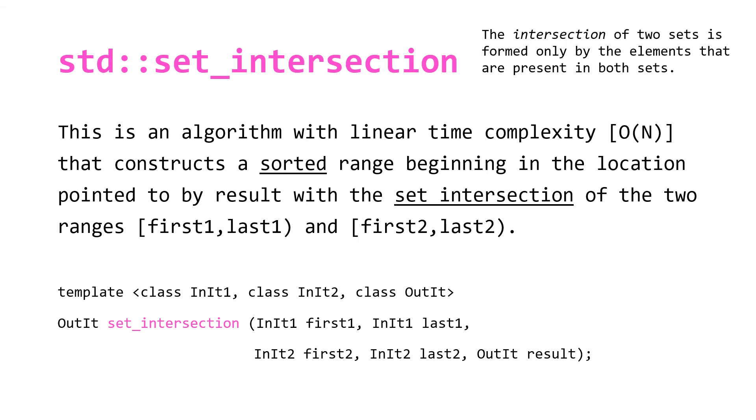Note that the intersection of two sets is formed only by the elements that are present in both sets. Using Venn diagrams once again, this will look as follows: only taking the elements that exist both in a and b. Very similar function declaration, just the name is different. Note that for all four of these algorithms, the ranges that you're passing also have to be sorted in order for these algorithms to work.